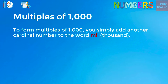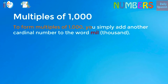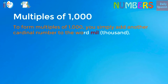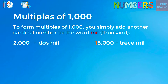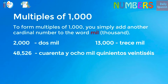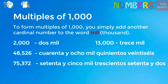Multiples of 1,000. To form multiples of 1,000, you simply add another cardinal number to the word mil — 1,000. Examples: 2,000; 3,000; 48,526; 75,372; 99,999.